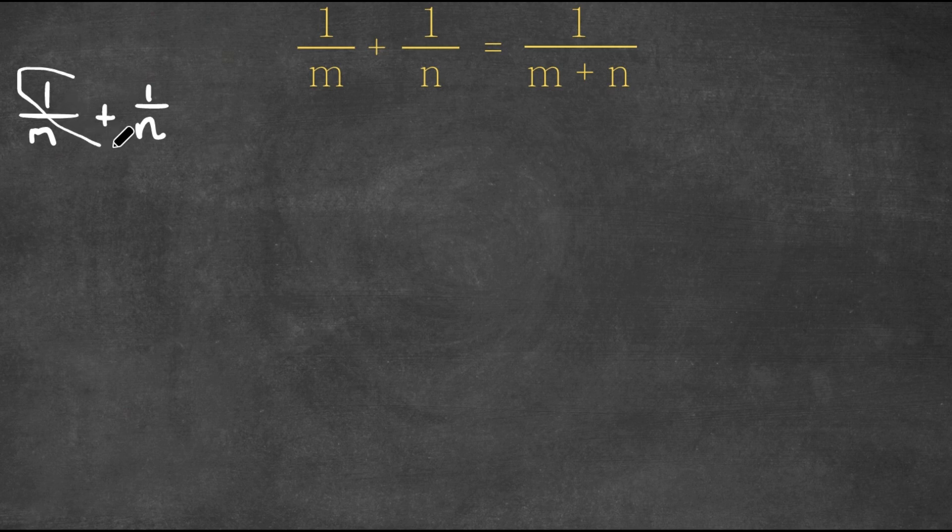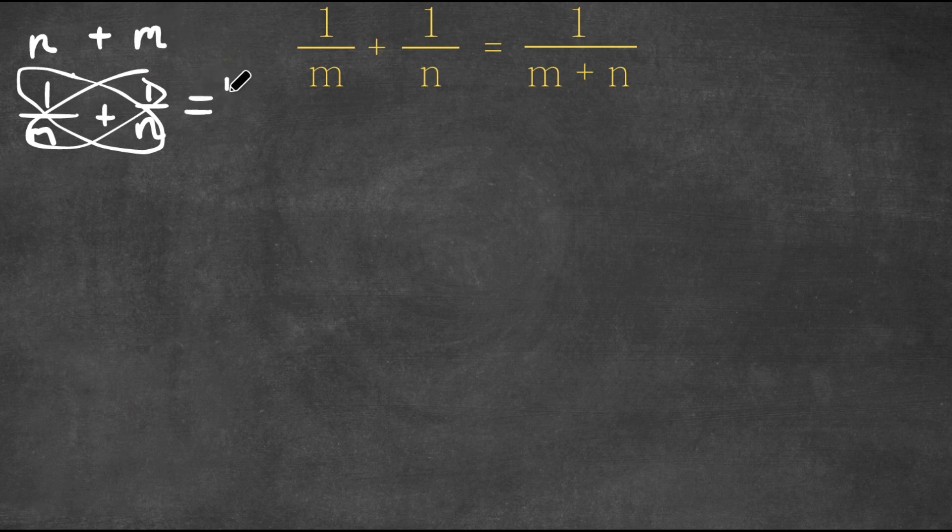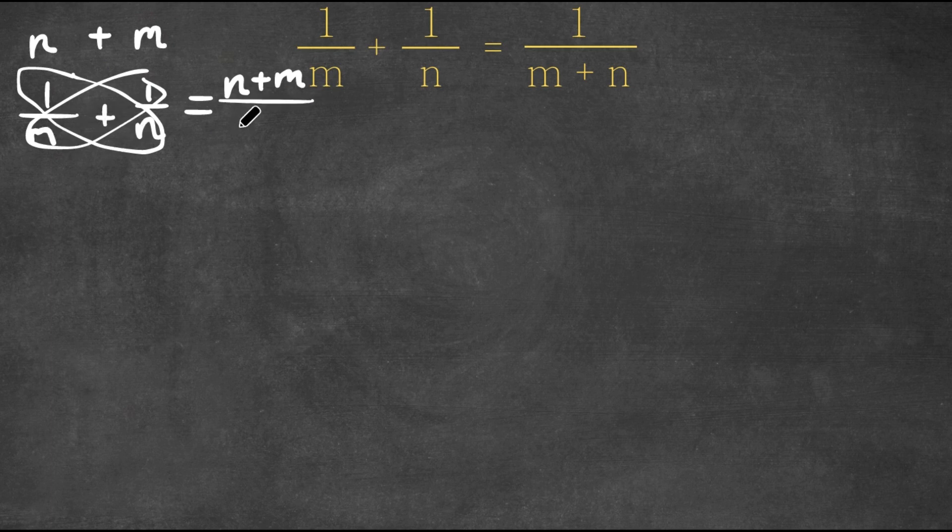If we cross multiply, 1 times n is n plus 1 times m is m. So n plus m would be our numerator and our denominator would be m times n, so m n.